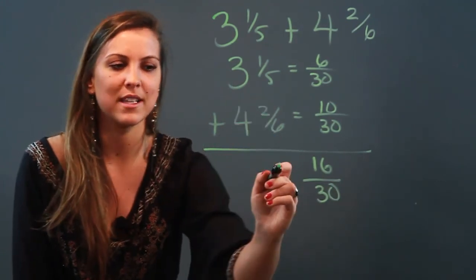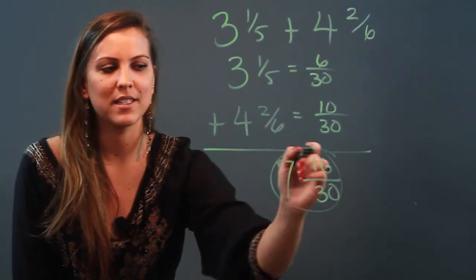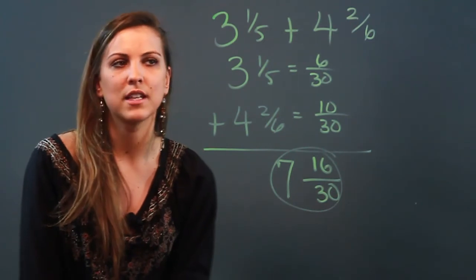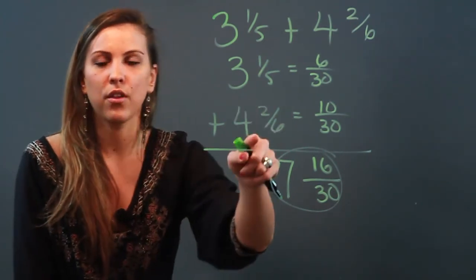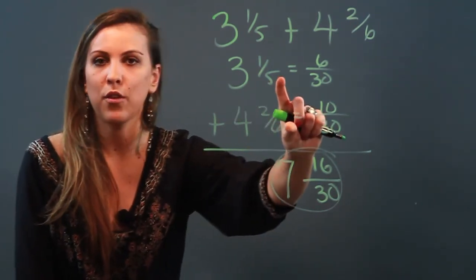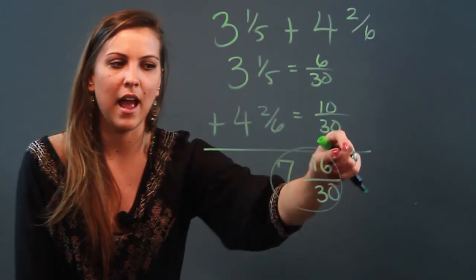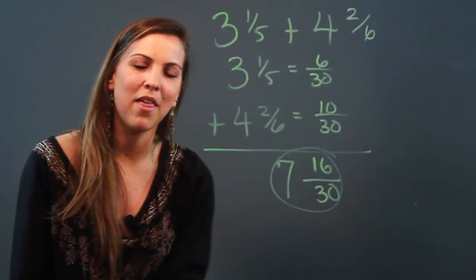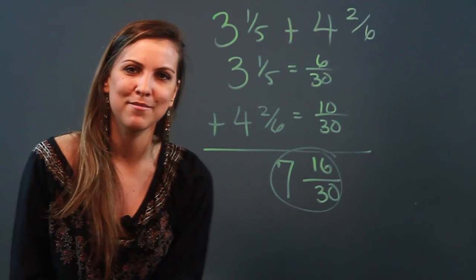So to add mixed numbers, add the whole number portion, make sure that their fractions have the same denominator and add that, and then you've got your answer. That is how you add mixed numbers.